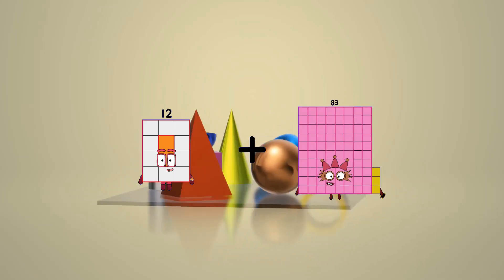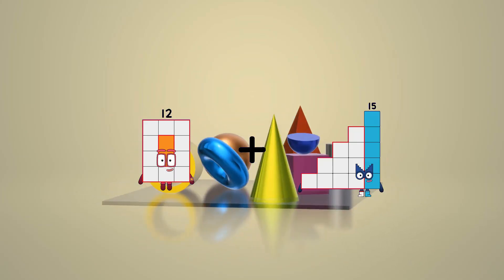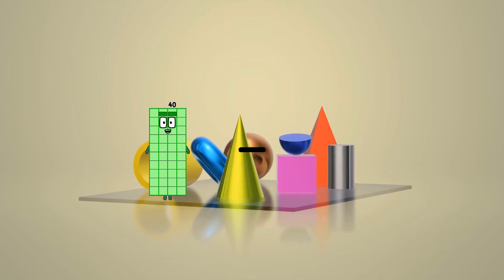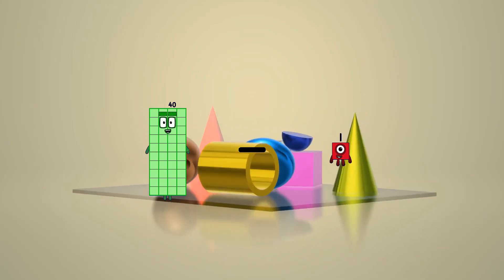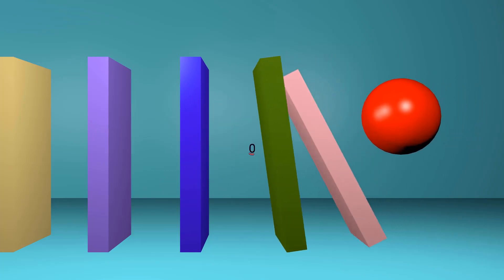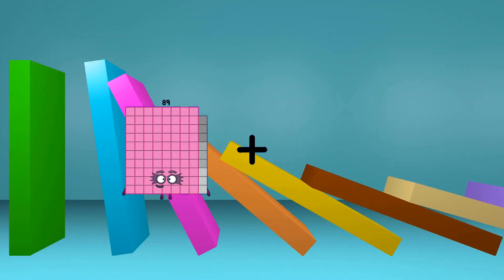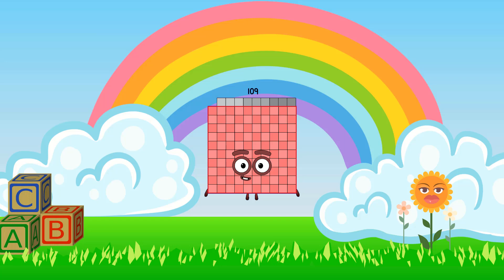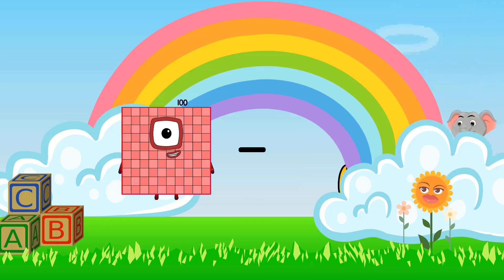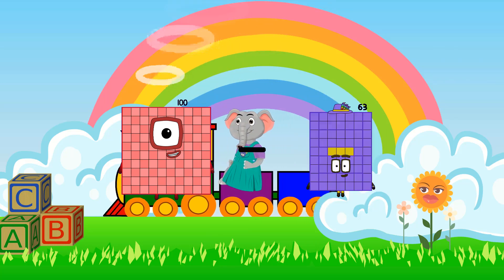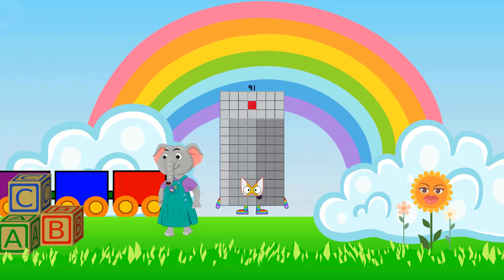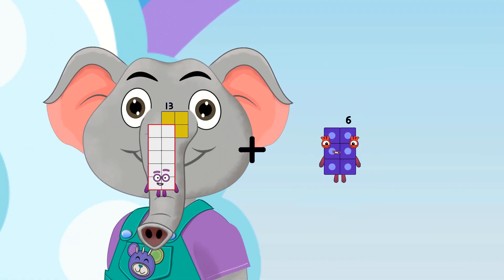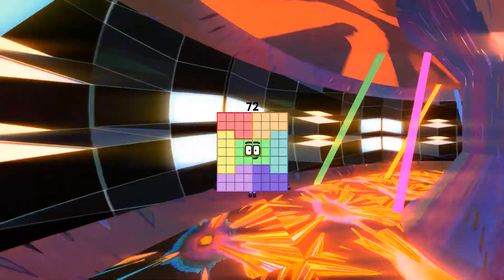12 plus 55 equals 64. 40 minus 40 equals 0. 89 plus 20 equals 109. 100 minus 9 equals 91. 13 plus 59 equals 72.